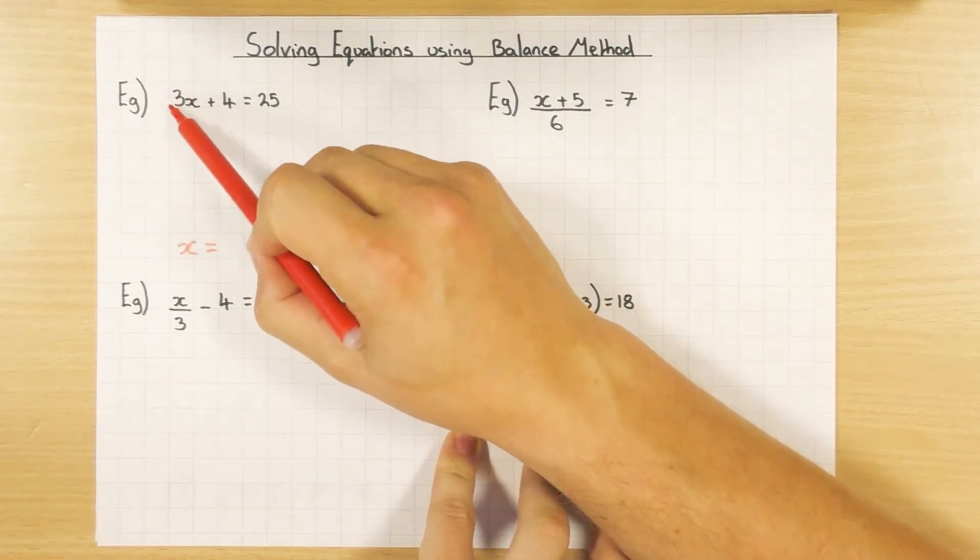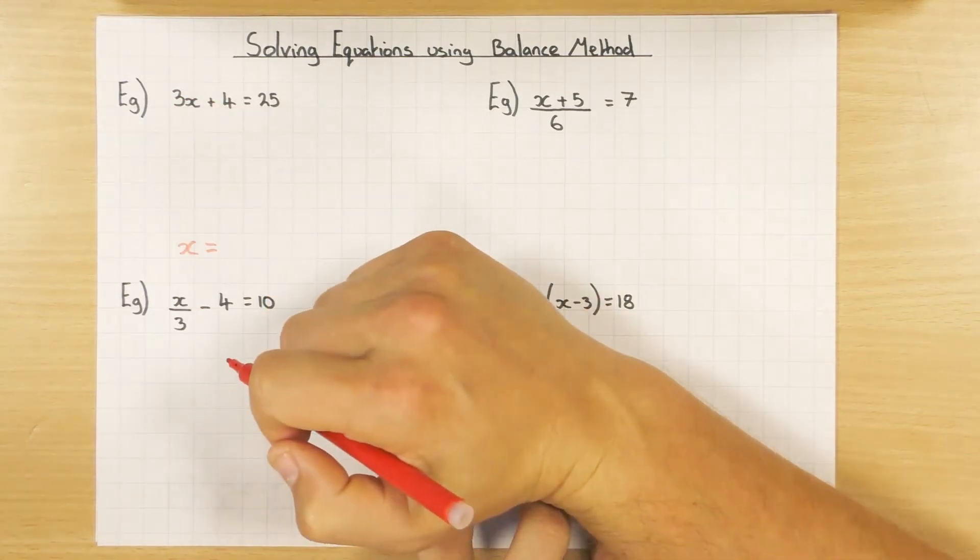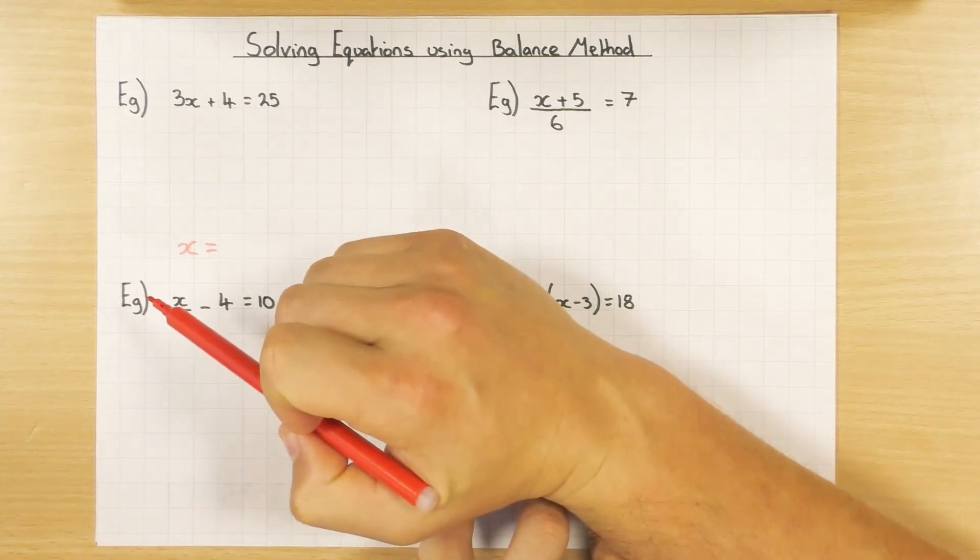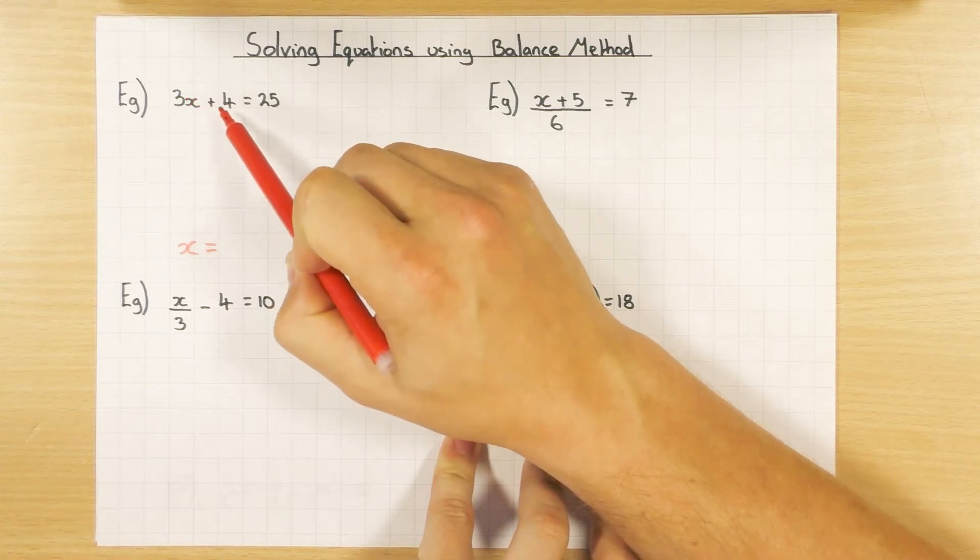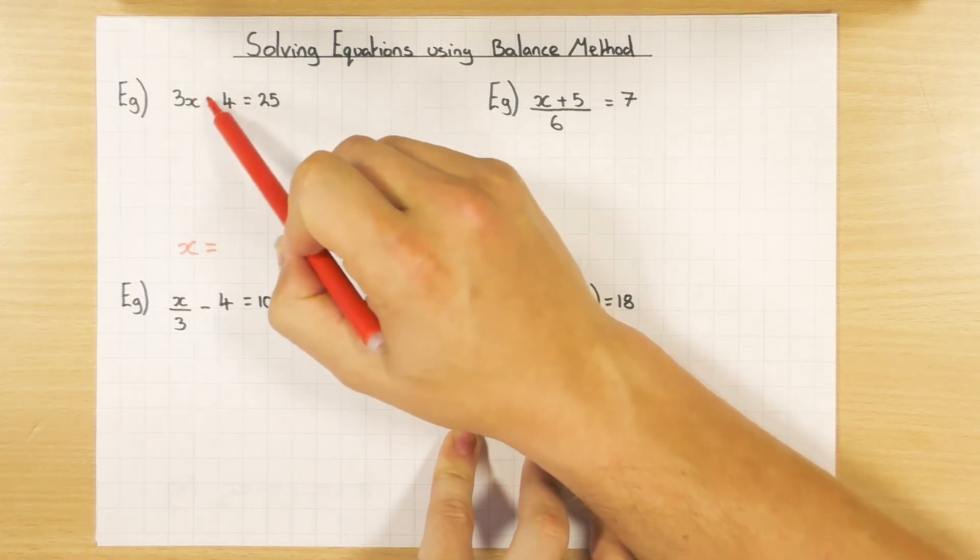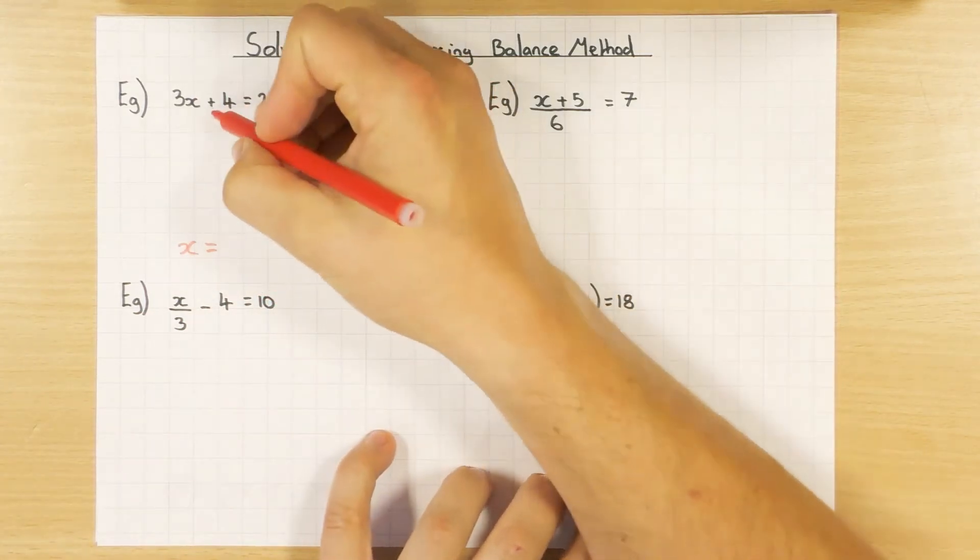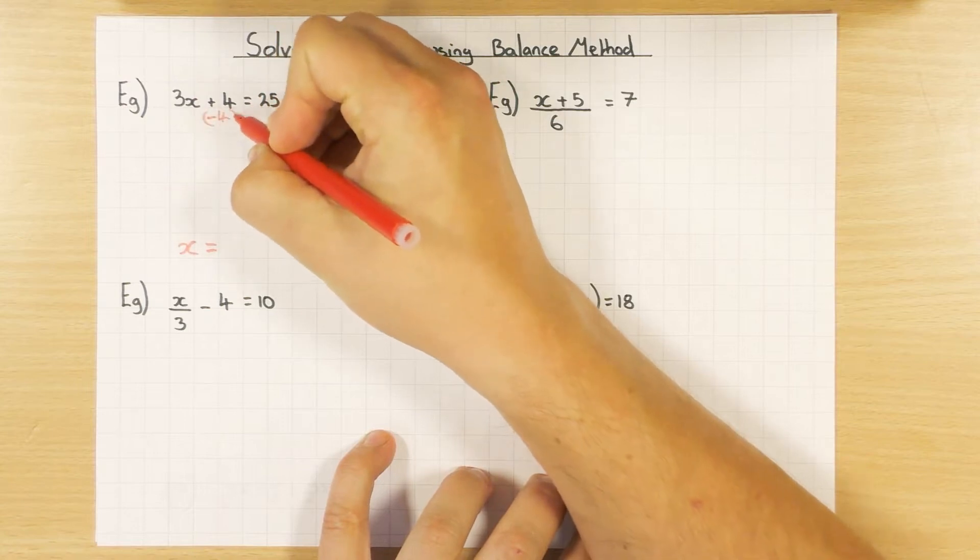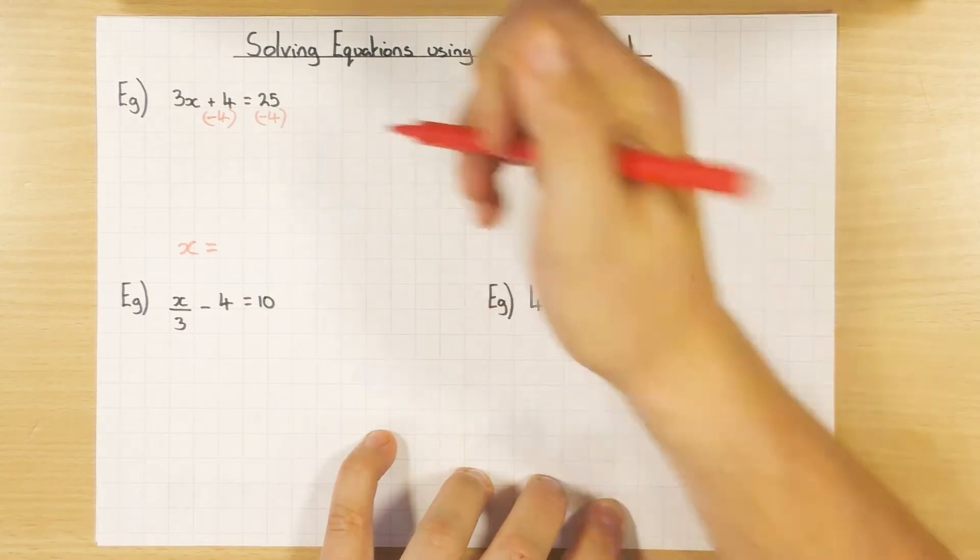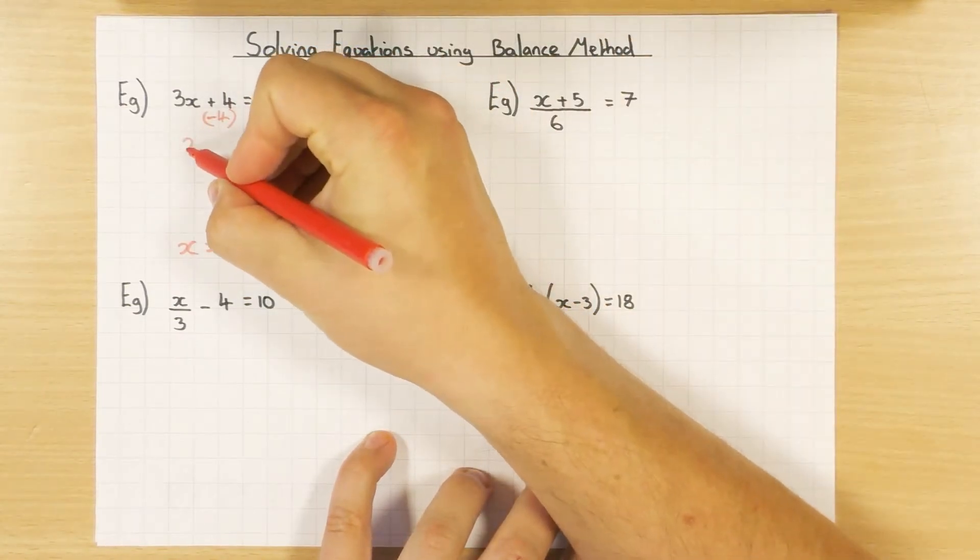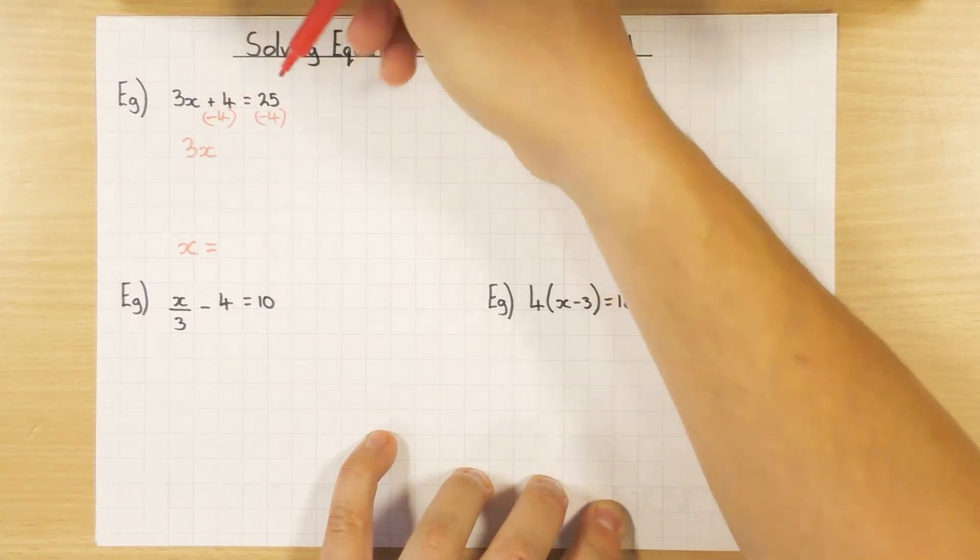So what have I got? I've got 3x, which means I'm doing 3 times x, and of course, I've got a plus 4. To get x on its own, the first step is, I always leave the x alone until the very end, and I get rid of everything else. So I'm going to get rid of this plus 4. To do that, I just do the opposite, and obviously the opposite of plus 4 is minus 4. So I minus 4, and just like I said, using the balance method, I do that to both sides.